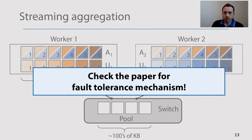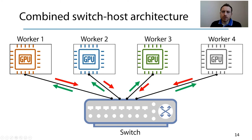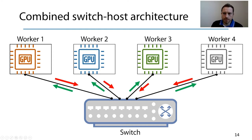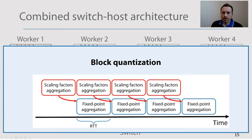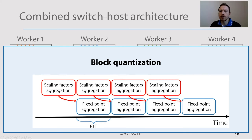Please check the paper for a detailed description of our fault tolerance mechanism to deal with packet losses. To deal with the limited computational capabilities of programmable ASICs, SwitchML uses a combined switch-host architecture where work is split between workers and switches. The workers drive the protocol, perform quantization to convert floating-point to fixed-point values, and address failures, while the switch performs fixed-point aggregation. SwitchML uses a block quantization approach where a round of aggregation performs fixed-point aggregation and computes the best scaling factors for quantization of the next block of elements.